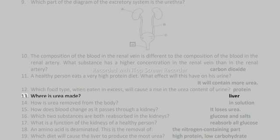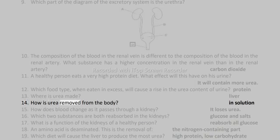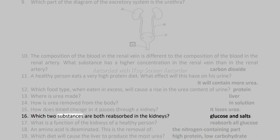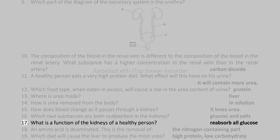Protein. 13. Where is urea made? Liver. 14. How is urea removed from the body? In solution. 15. How does blood change as it passes through a kidney? It loses urea. 16. Which two substances are both reabsorbed in the kidneys? Glucose and salt.